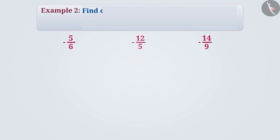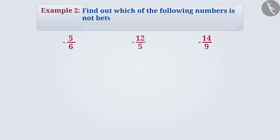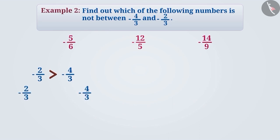Next example: find out which of the following numbers is not between minus 4 by 3 and minus 2 by 3. Here, minus 2 by 3 is larger than minus 4 by 3. Hence, the number which comes between these two numbers will be larger than minus 4 by 3 but smaller than minus 2 by 3. Let's talk about minus 5 by 6.